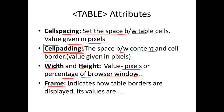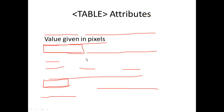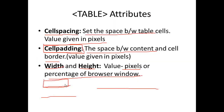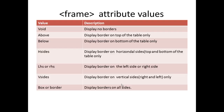The frame attribute indicates how table borders are displayed. The values include: void — no borders will be displayed; above — display border on top of the table only; below — display border on the bottom side only.